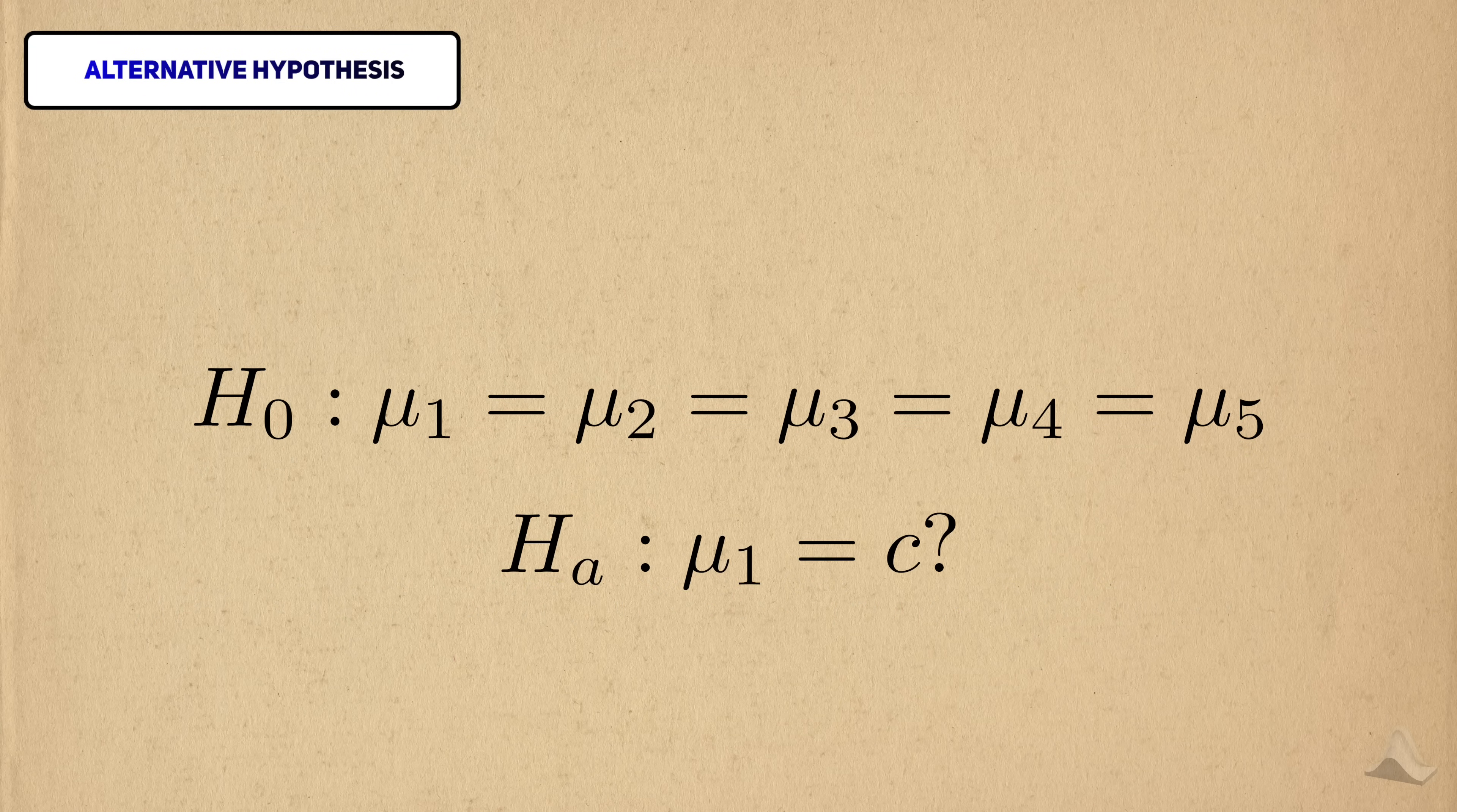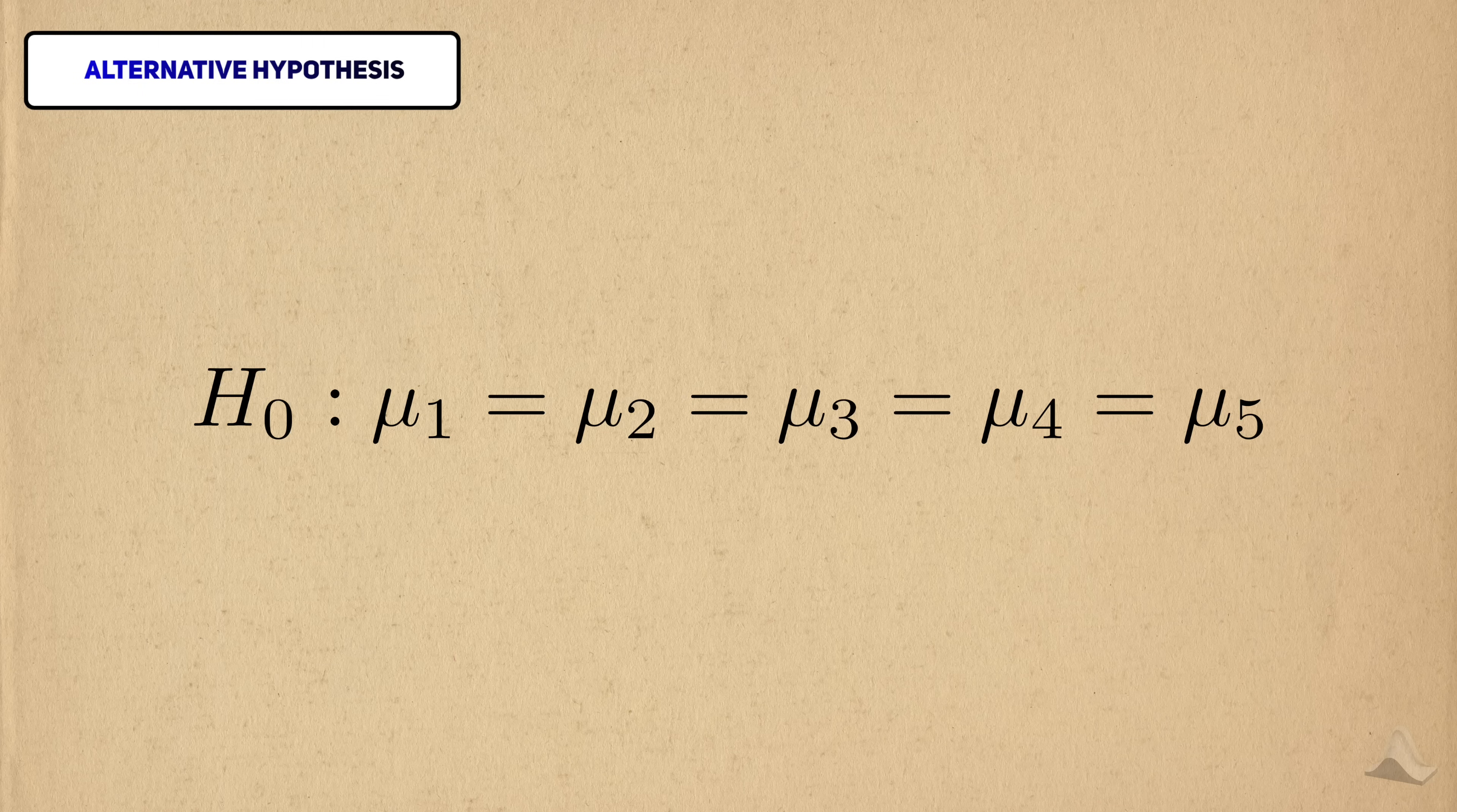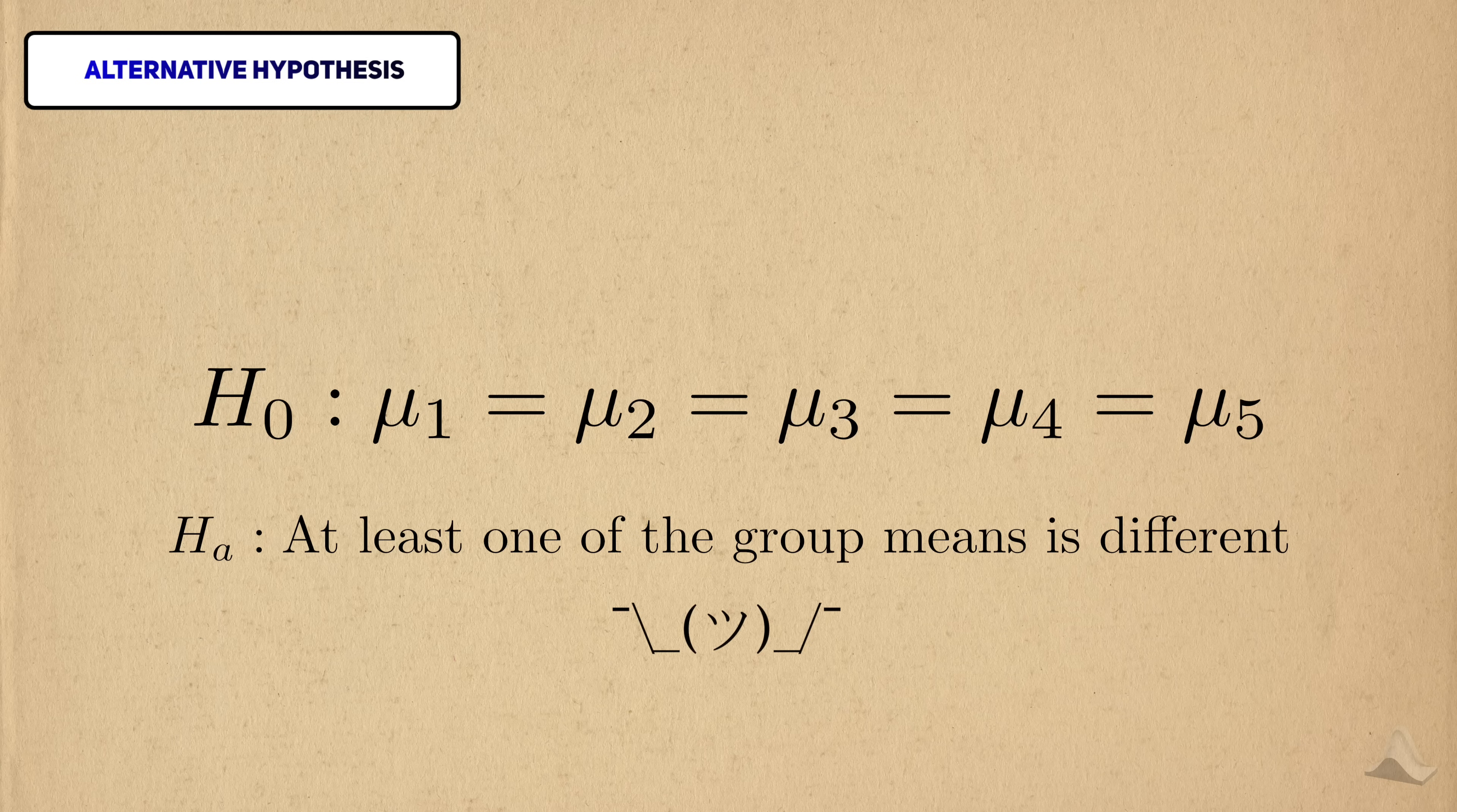It's tempting to think that the alternative is that one of the group means is some specific value, but that's not the case here. For the null hypothesis to be true, all of these equal signs have to be true. So the alternative hypothesis is that at least one of the group means is different. Note that the alternative hypothesis doesn't tell us which of the group means is different, just that at least one of them is.